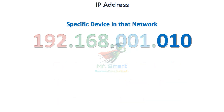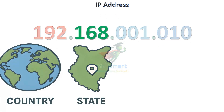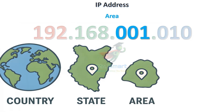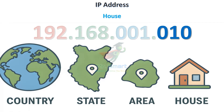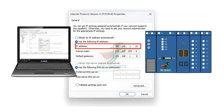To explain it more simply, it's similar to a real-world address. The first octet is like your country. The second octet is like your state. The third octet is like your area or city. And the last octet is like your house. Just like a mailman needs your full address to deliver a package, a PLC or any device in a network needs an IP address to communicate with a PC or other devices.